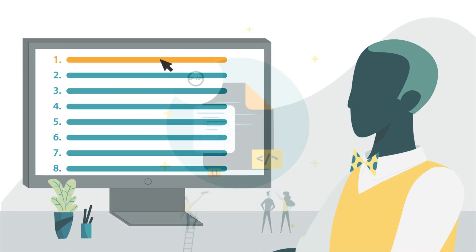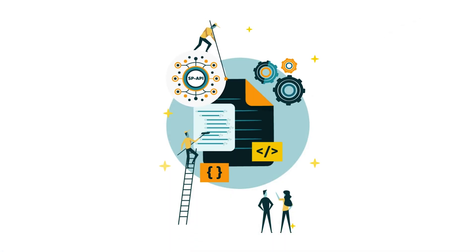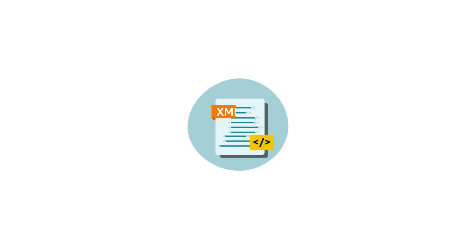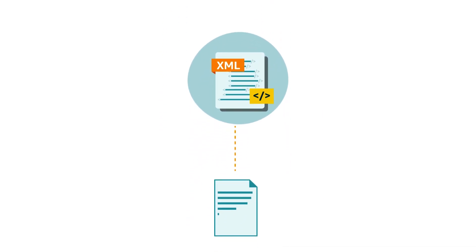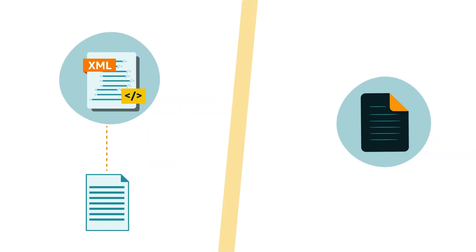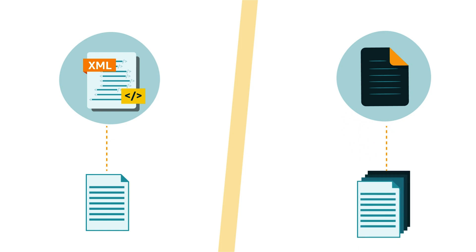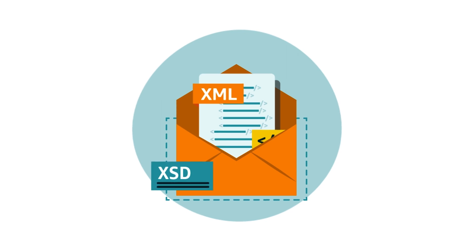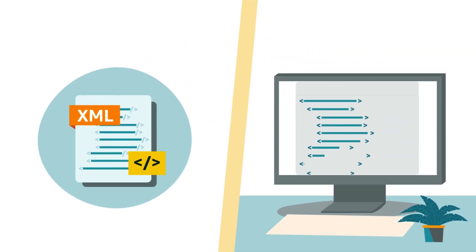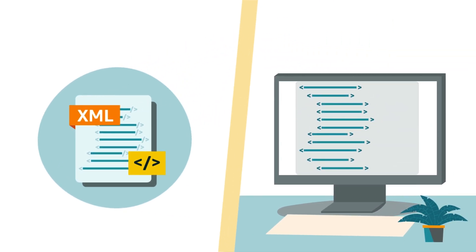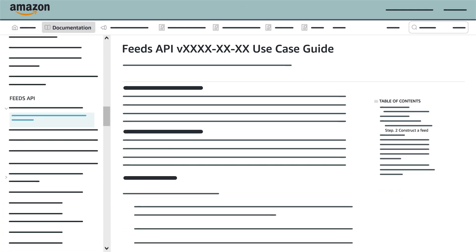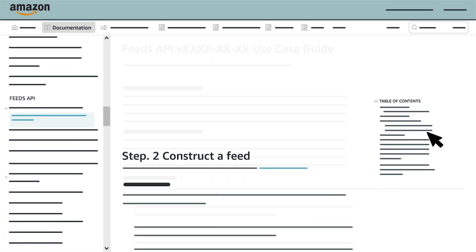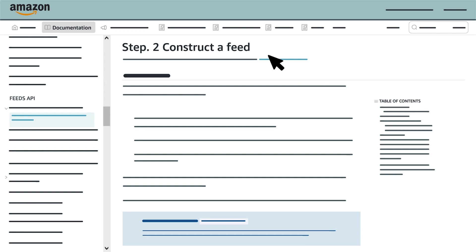First, you'll construct the feed you want to upload. You can use an XML file to upload limited data or a flat file to upload data in bulk. Make sure you wrap an XML feed in an Envelope XSD. For more information about XML feeds and an example feed, select Step 2, Construct a Feed, from the Table of Contents in the Feeds API Use Case Guide.